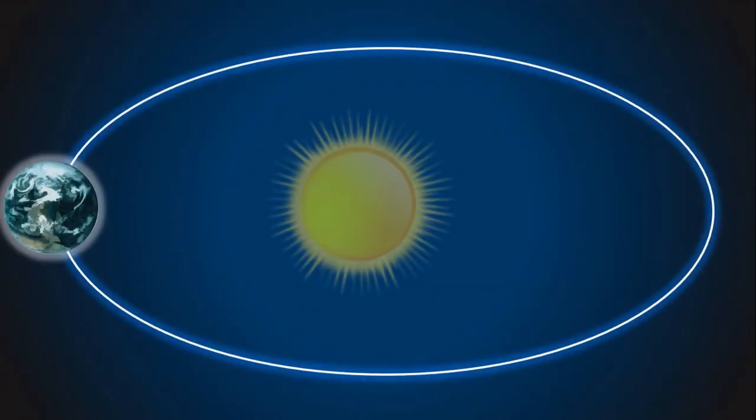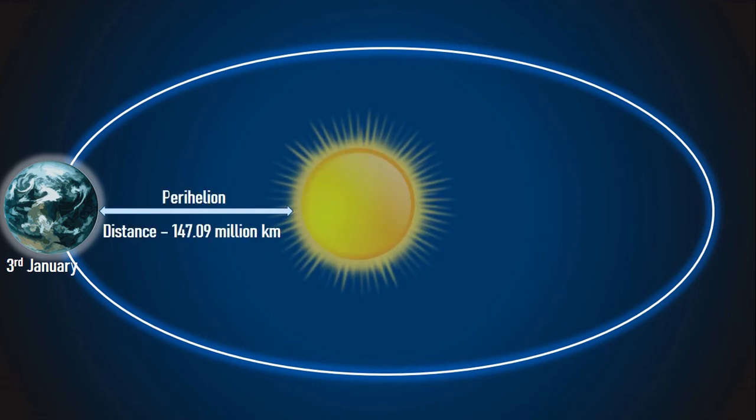As discussed earlier, the Earth-Sun distance is not same throughout the year. On and around January 3rd, it is approximately 147.09 million kilometers, which is termed as perihelion, or when Sun and Earth are nearest.